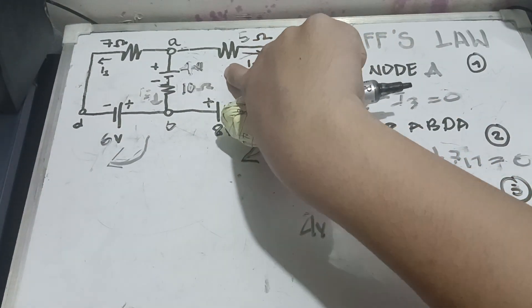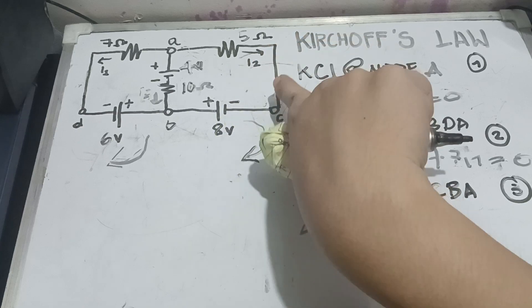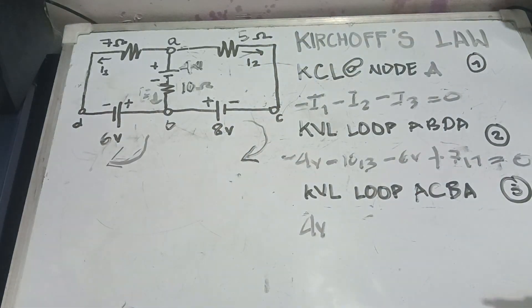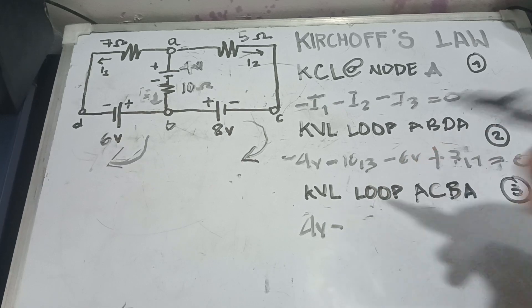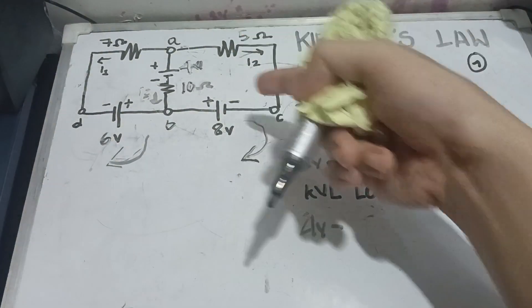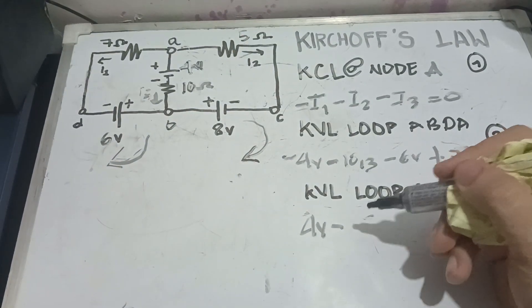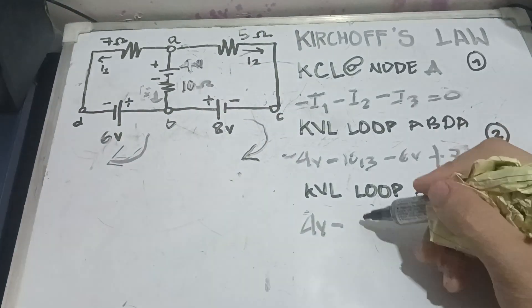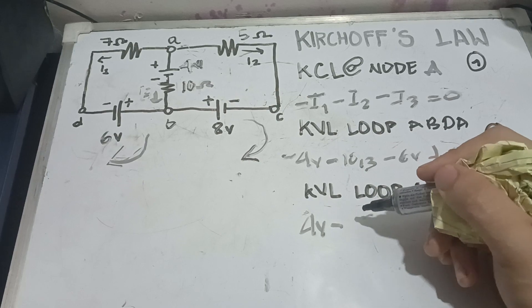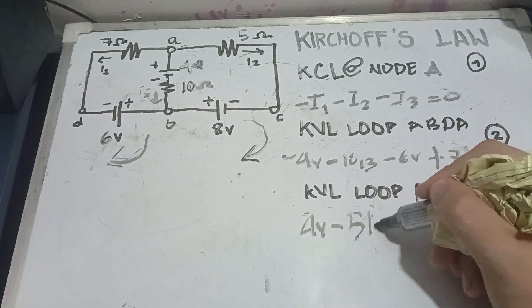We have here our 5 ohms. So, 5 ohms of I2 is going in the same direction. It means we're going the same way. So, it's going to be negative 5 I2.